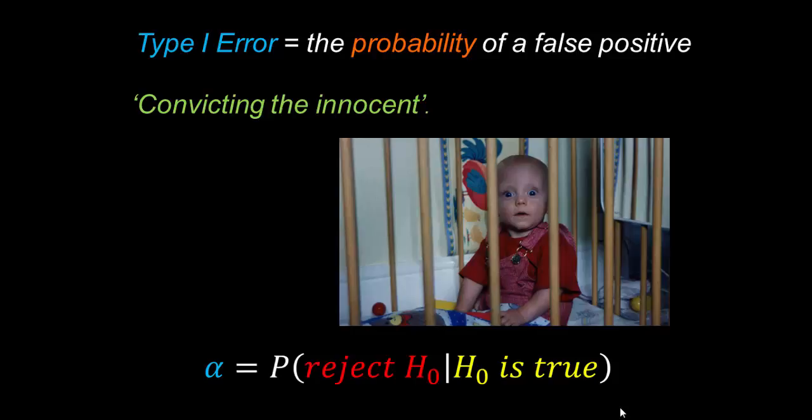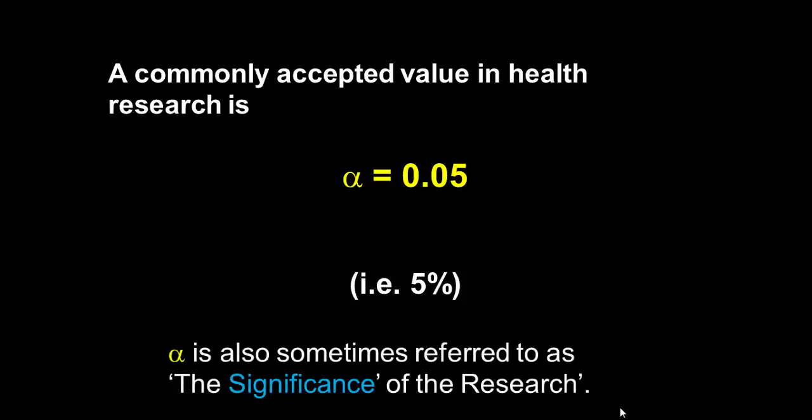And in the textbooks again they like their conditional probabilities. Alpha, a Type I error, is written as probability of rejecting a null hypothesis given that the null hypothesis was true after all, and therefore that's why it's a mistake we have committed something in error. Now just as we had commonly accepted values for beta, remember that was 0.2 in health research, for alpha a commonly accepted value is 0.05, in other words five percent.